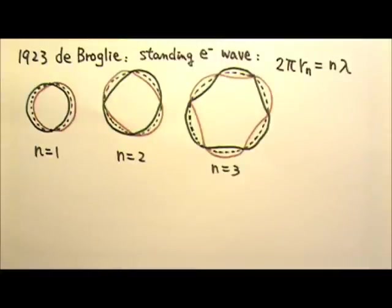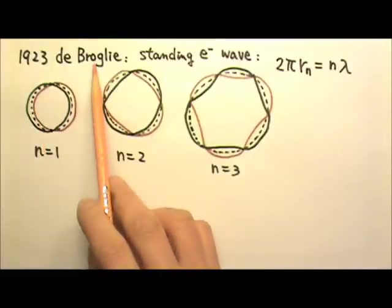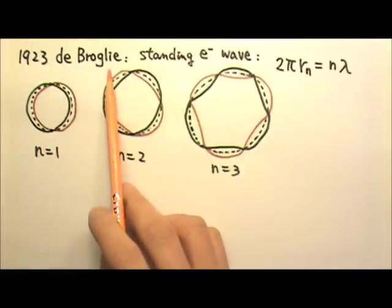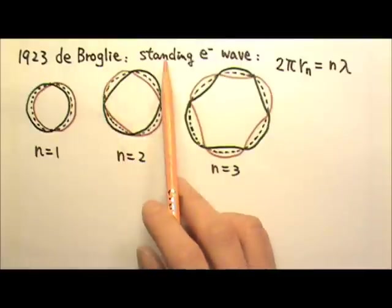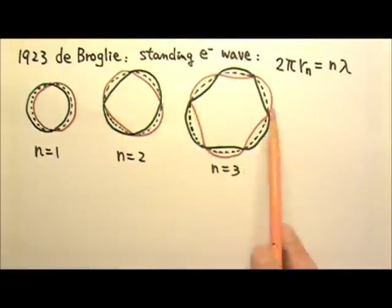It's worth noting that when Bohr made his quantum assumption, he only aimed at matching the empirical data. Then in 1923, de Broglie explained Bohr's quantum assumption using standing electron waves in circular orbits.